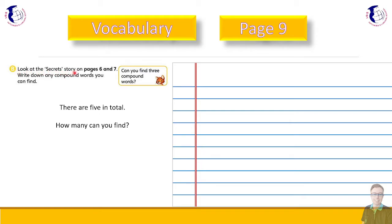So look at the secret story on pages six and seven. So remember that's the one we read already. Can you find three compound words? So write down any compound word you can find. There are five in total. How many can you find? So go back to page six and seven. Have a look through the story. And then write down as many compound words as you can. So pause the video again here. And unpause when you finish writing them.